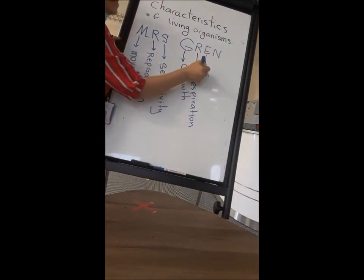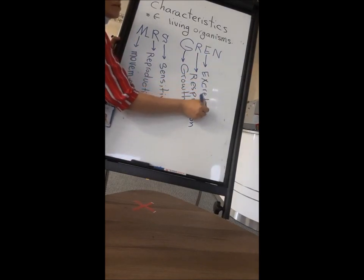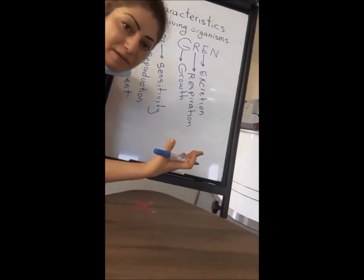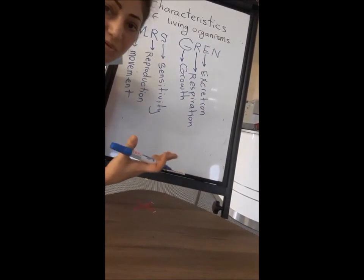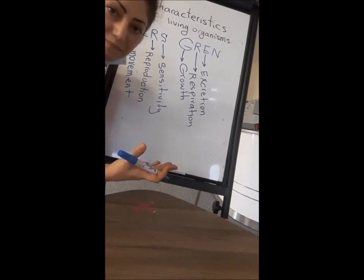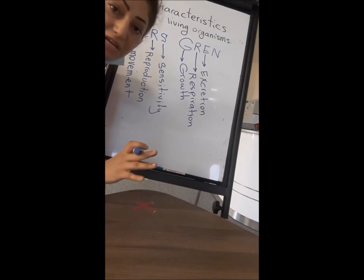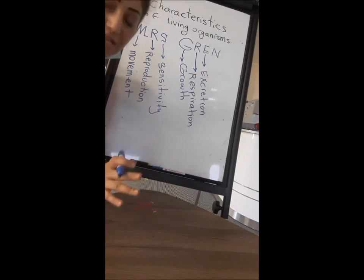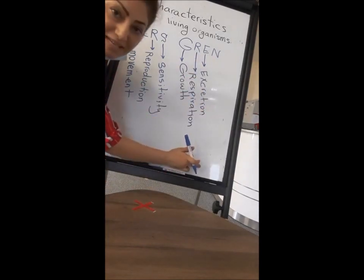E stands for Excretion. Excretion means to give out the excess waste materials that you do not use, or that are toxic or poisonous for your body. These are usually the products of metabolism. If they stay in your body or cells, they become toxic, cause mutation, or cause diseases. So you must get rid of them through excretion. If any organism does excretion, it means it is alive.